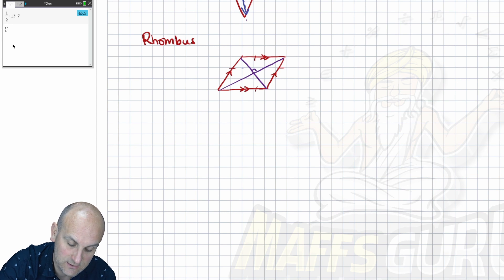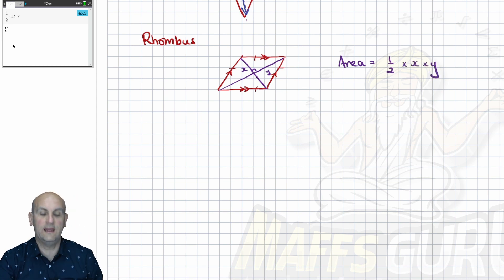So in this situation, that's x and that's y. It doesn't really make any sense, those are x and y in there, because they're actually diagonal. So the area of a rhombus is once again, a half times x times y.